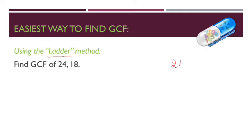You will write 24 and 18 beside each other like this. Then you will make a big L like this. Then you ask yourself: what is the prime number that can divide both 24 and 18? Starting from 2 — can we divide both of these numbers by 2? Yes, we can. So we write here 2.